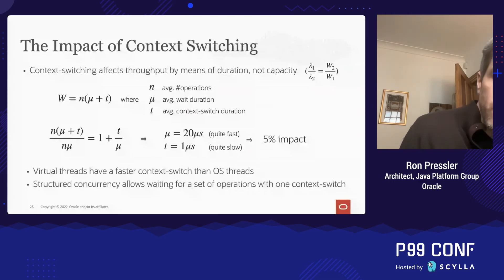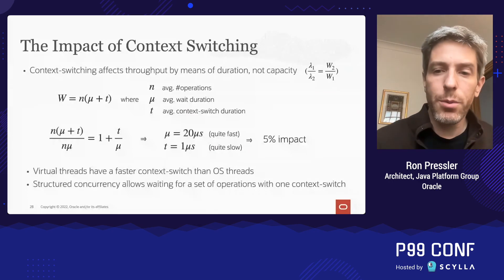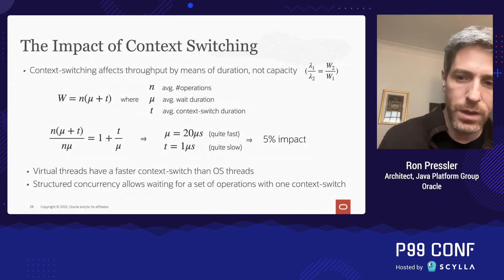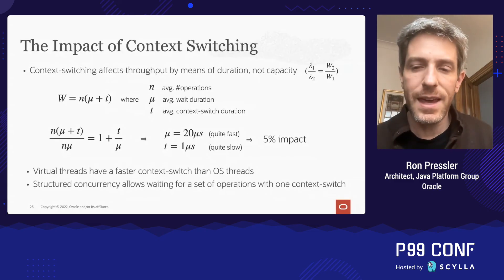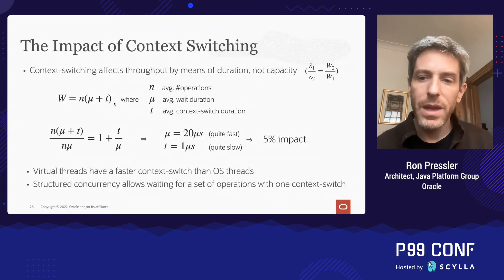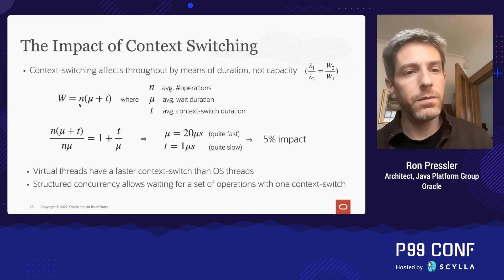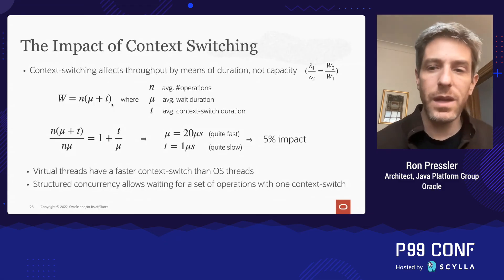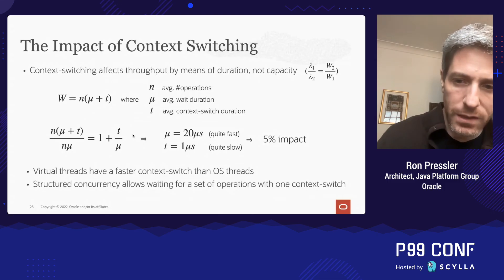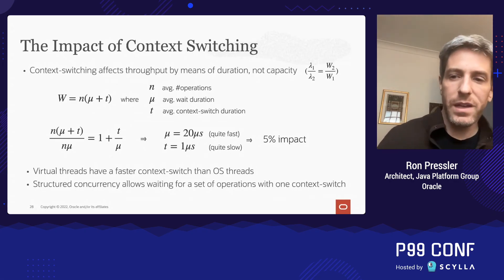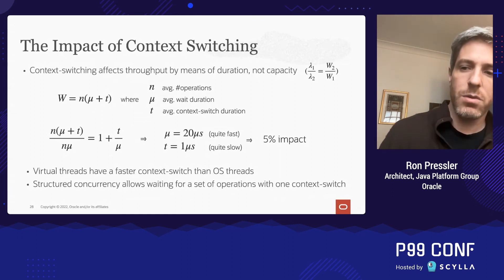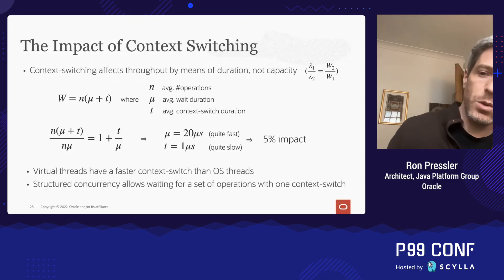I've seen various discussions online where some people think that the performance benefit of user-mode threads comes from having faster context switches, so let's examine that. A context switch occurs when an operation needs to wait for some external signal, and so we deschedule it from the CPU and schedule another in its stead. Context switching directly impacts the latency W. The impact of context switches on latency and throughput is the ratio between the average duration of a context switch and the average wait time. The overall impact is low in comparison to the orders of magnitude increase in thread capacity offered by user-mode threads. Still, virtual threads do have a faster context switch.